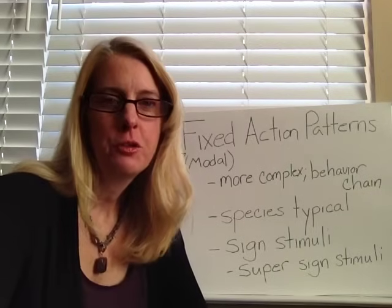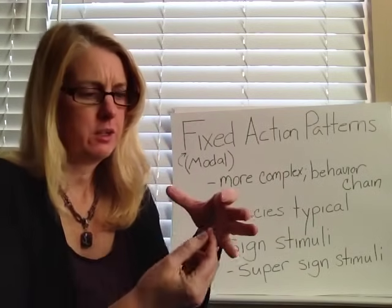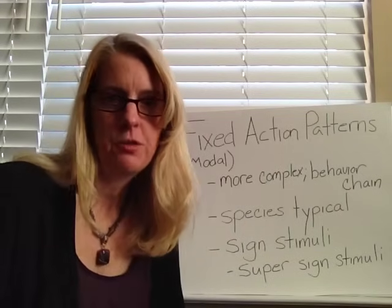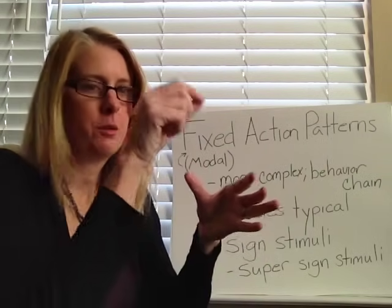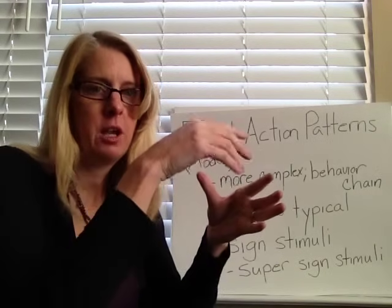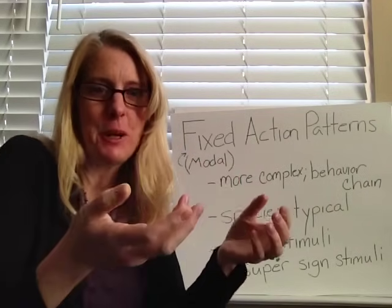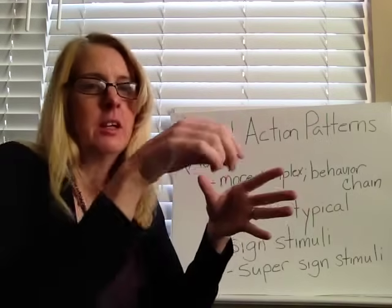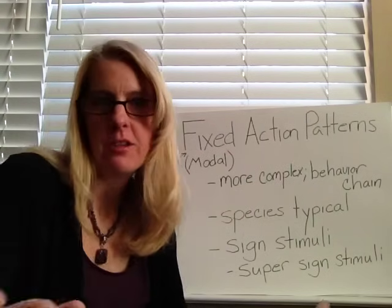Another example is a cocoon-spinning spider with a fixed action pattern of spinning a cocoon to lay its eggs. It spins the walls, goes down, spins a little cone, goes up, lays its eggs, spins the top, and it's done. If you mess with the spider during any part of that, it will still go to completion. If a researcher clips off the bottom, the spider just continues — it'll lay its eggs, they'll fall through, it'll spin the top, and be done. Or if you disable the silk mechanism, it will still go through all the motions. These are very hardwired behavior chains — once they start, they just go to completion.